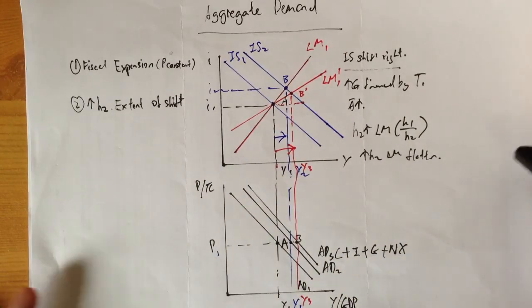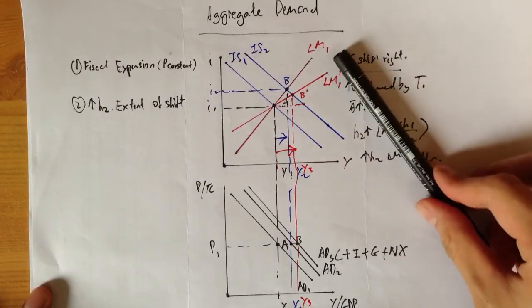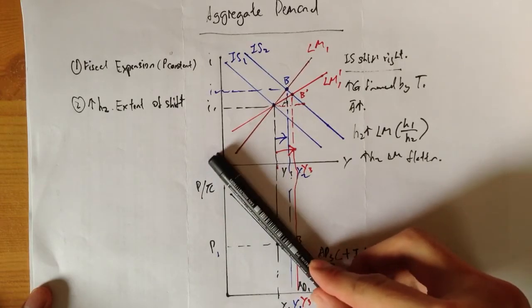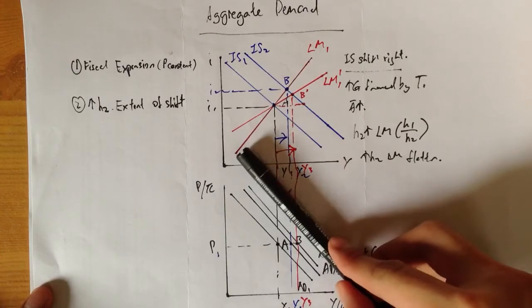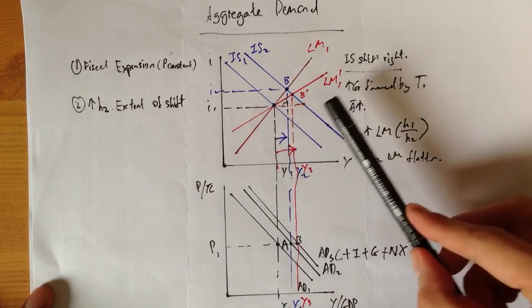So in conclusion, the shift of your LM can actually affect the extent of your shift, whether it is lesser or more. That's pretty much how your AD responds to a fiscal expansion or contraction.